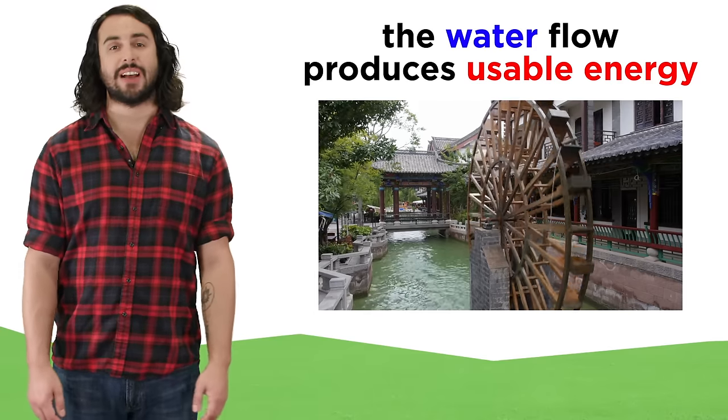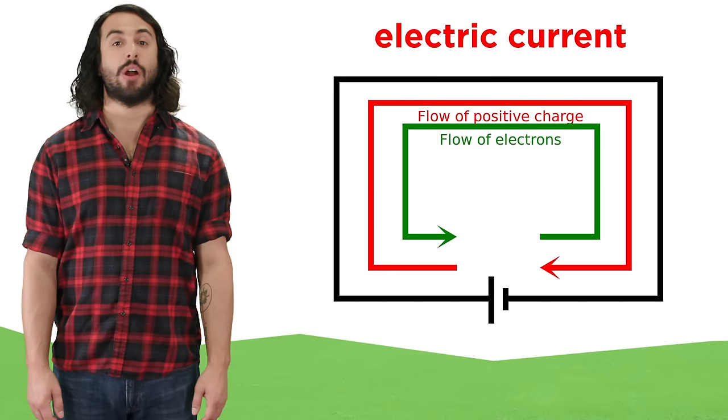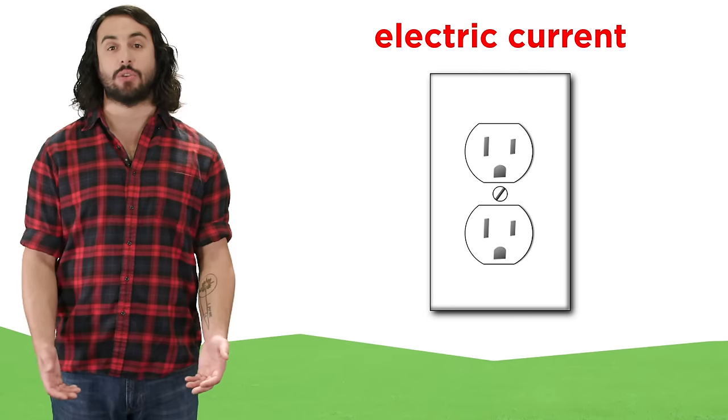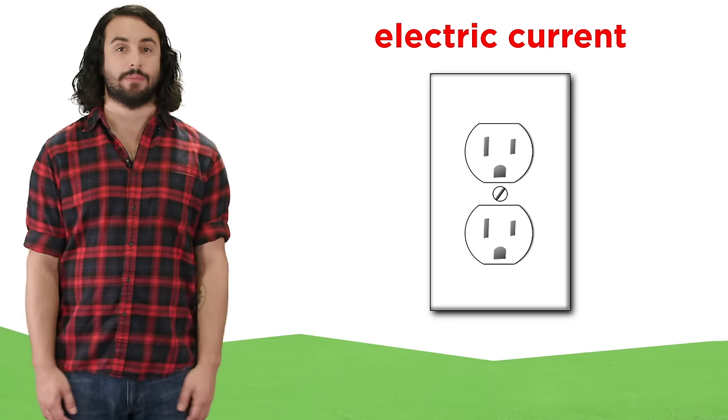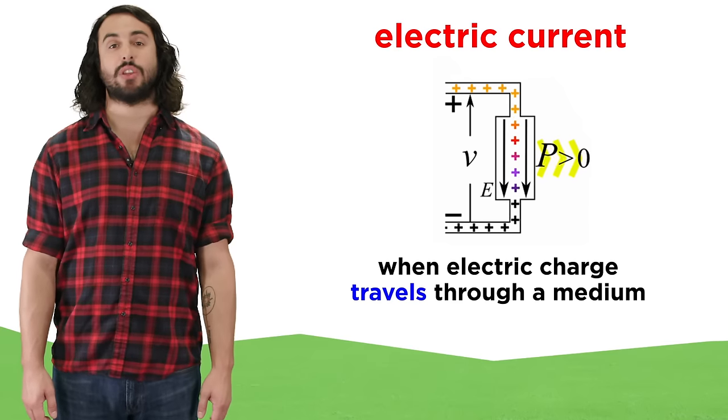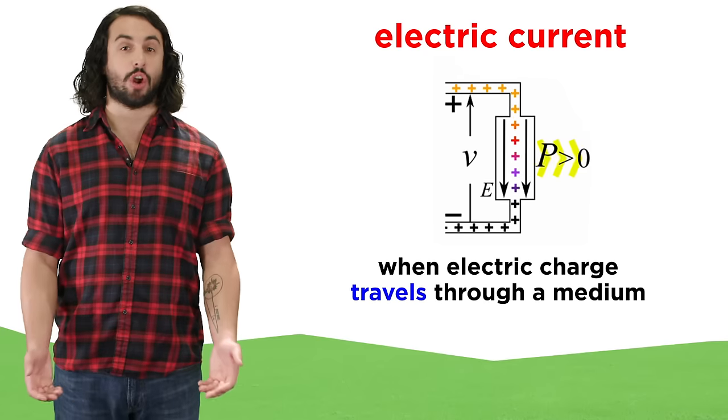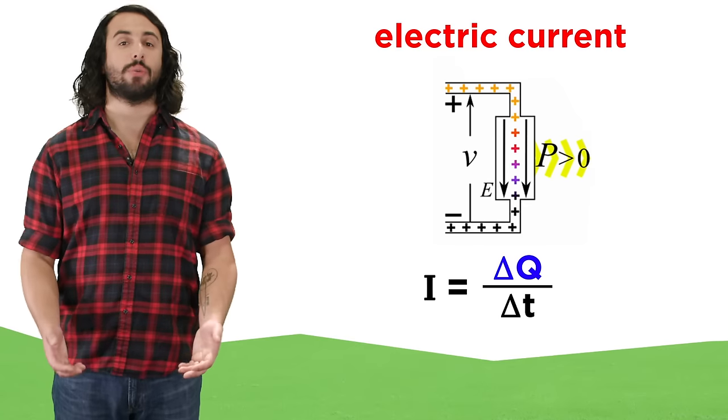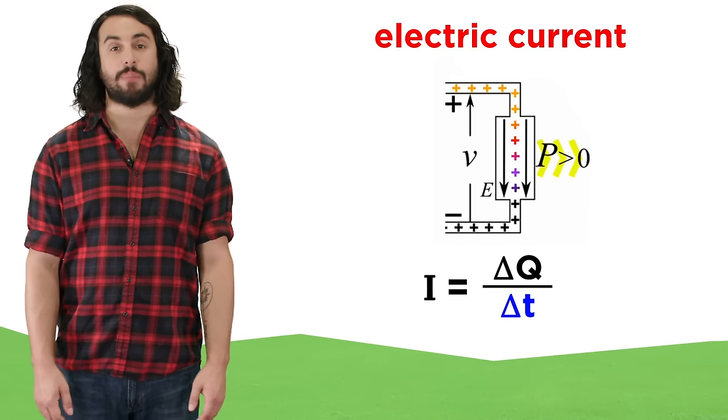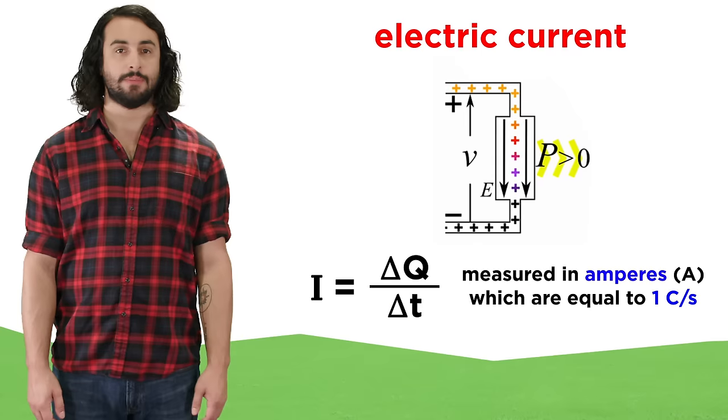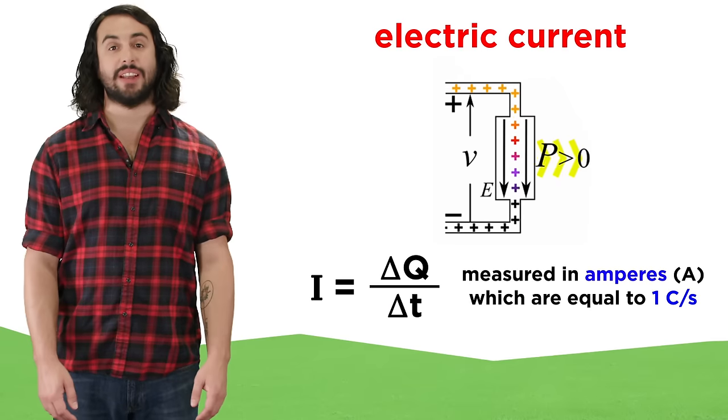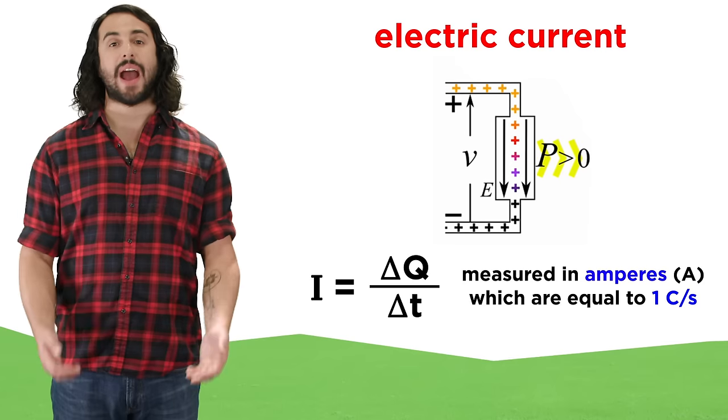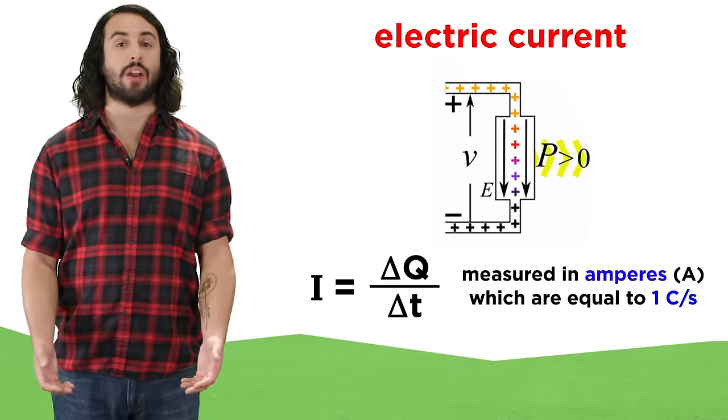In this way we can discuss electric current, and our ability to manipulate this current is responsible for our mastery of electrical power. A current exists whenever there is a net movement of electric charge through a medium. This can be defined as the total charge passing through a given area divided by the time interval. The SI unit for current is the ampere, which is equal to one coulomb of charge passing a particular cross-sectional area per second.